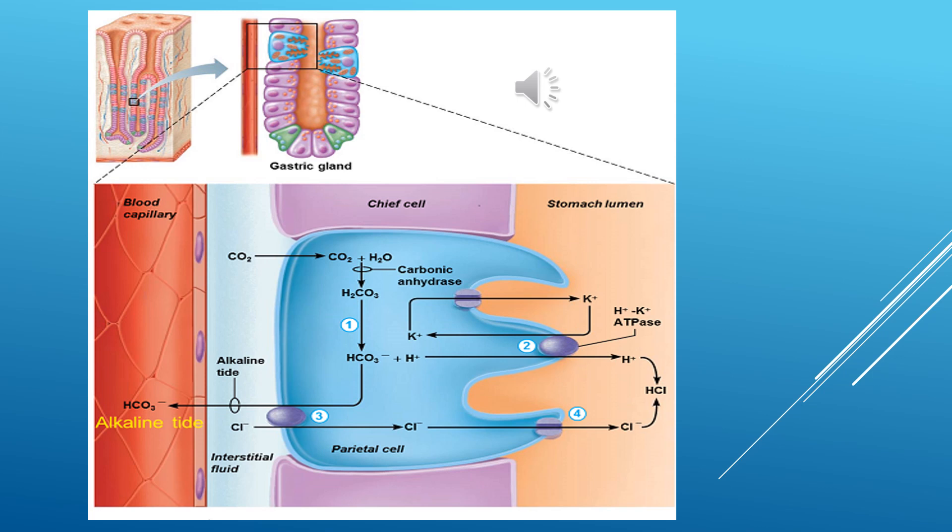Production of hydrochloric acid in the stomach. Hydrochloric acid is produced by parietal cells of the stomach.